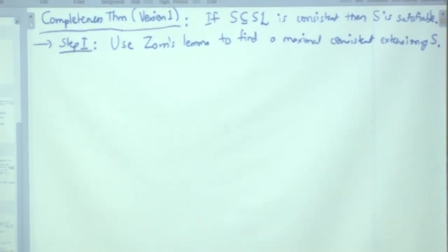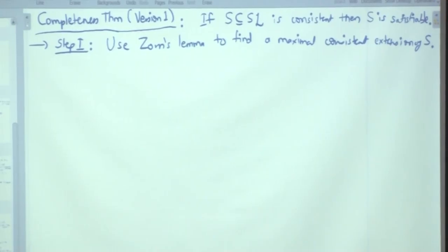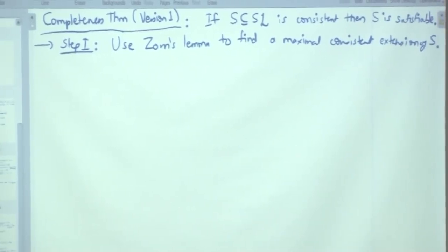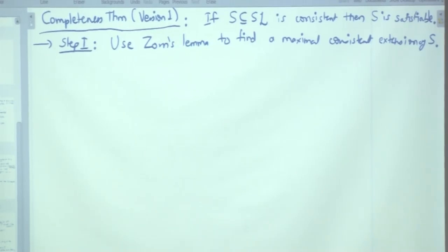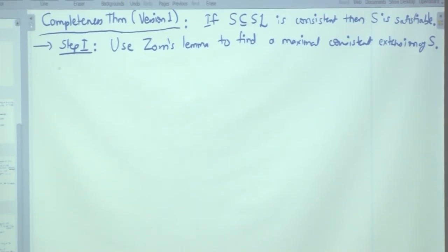Step one, use Zorn's Lemma to find a maximal consistent extension of S. And then step two is to define the valuation and verifying that it is actually a valuation. Maximally consistent, what does that mean? That you have a saturation, a saturated set. If T is a maximally consistent set, then if you add anything else to it, it immediately becomes contradictory or inconsistent. In this case, inconsistent. So we want to do that.